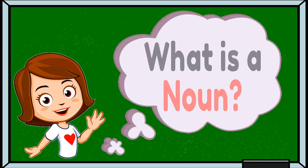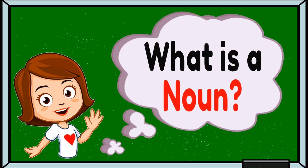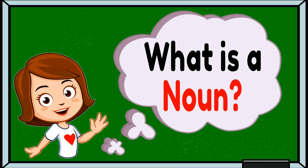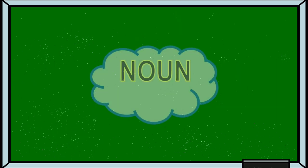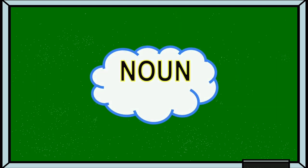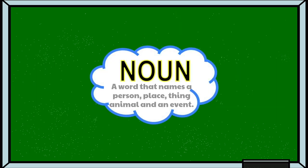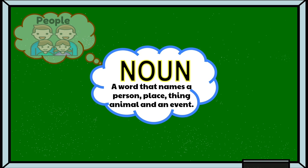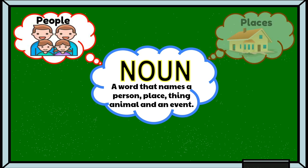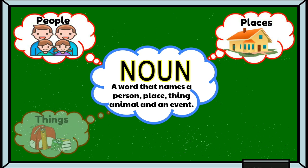What is a noun? A noun is a word that names a person, places, things, and animals.